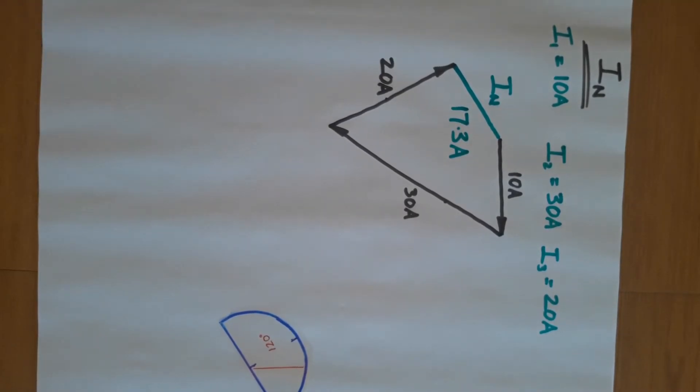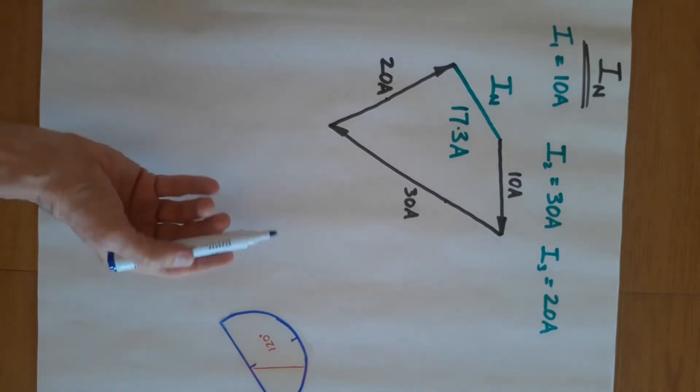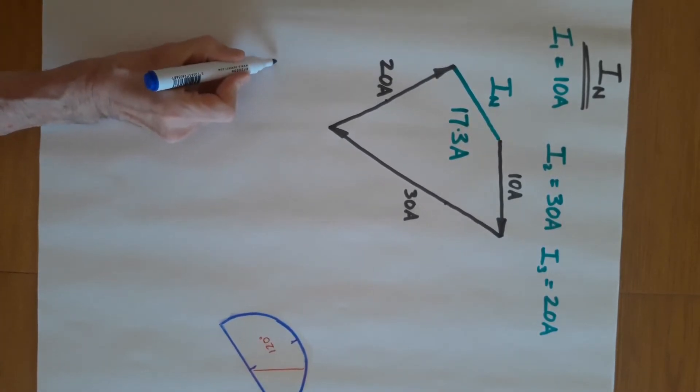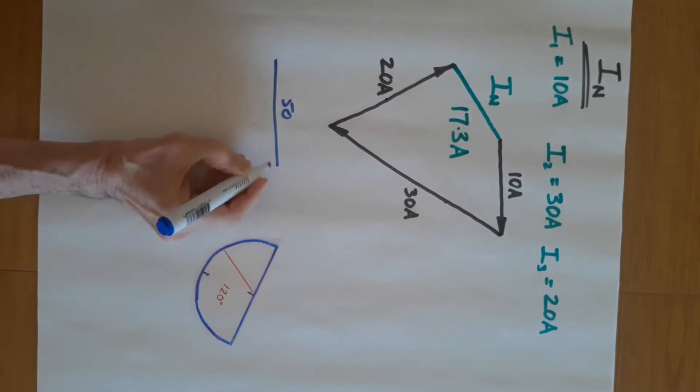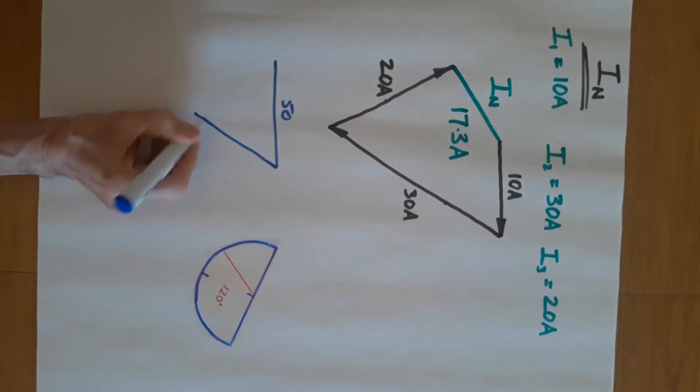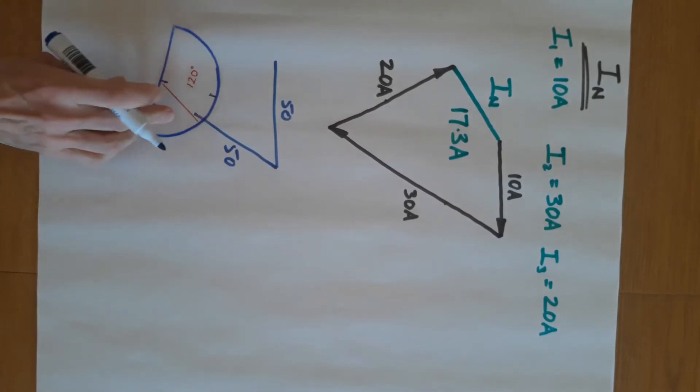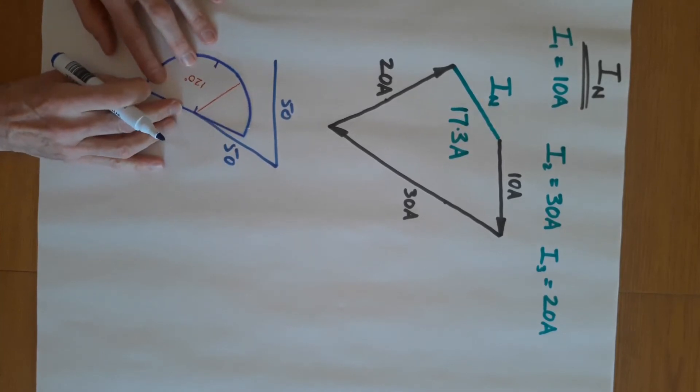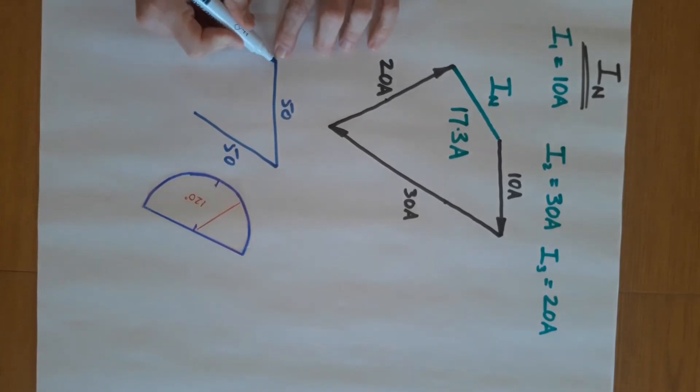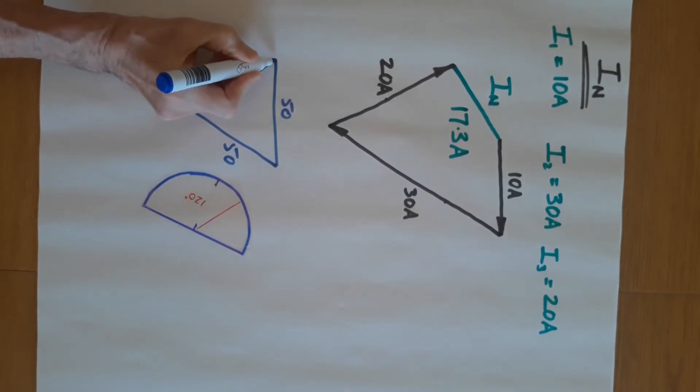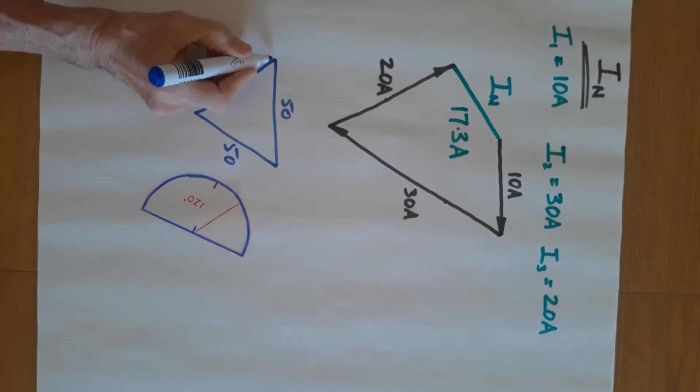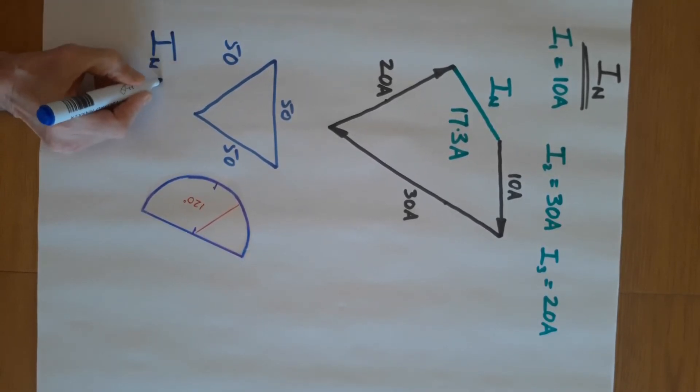Okay, so just a quick consideration of some different scenarios. If we had three equal currents in a system, suppose each current was 50 amps. Then you're going to draw a line that is 50, come around 120 degrees, draw another line that is 50, come around 120 degrees, draw another line that is 50. And you'll find that if they're all equal, then where you start is where you finish - in other words, there is no neutral current.